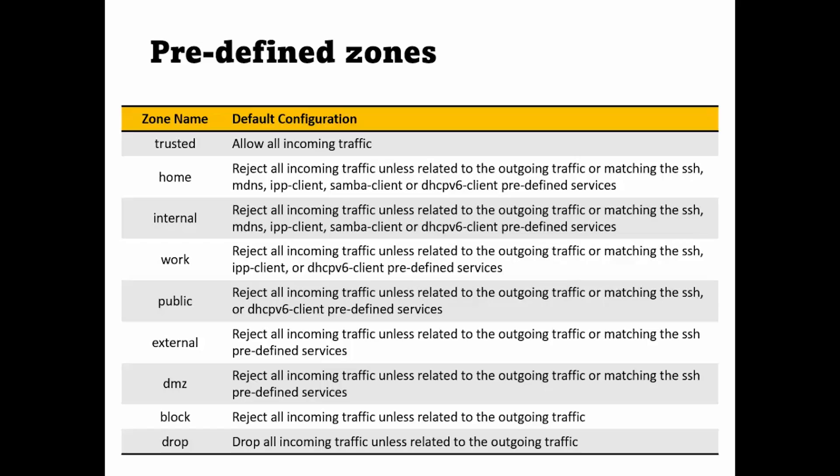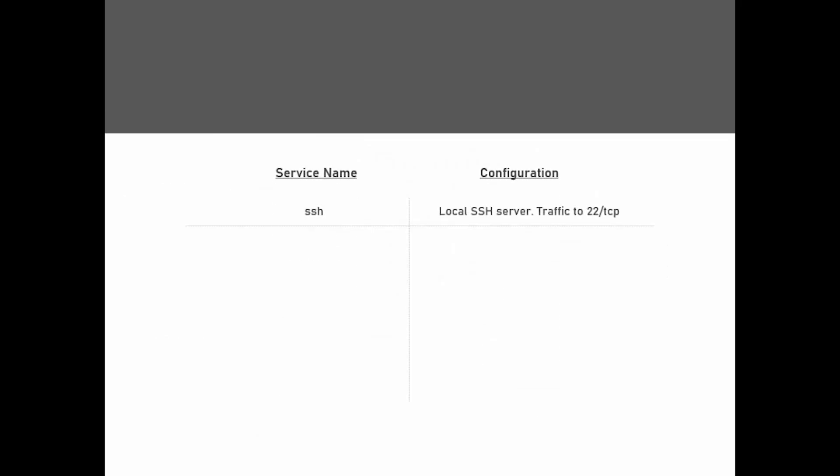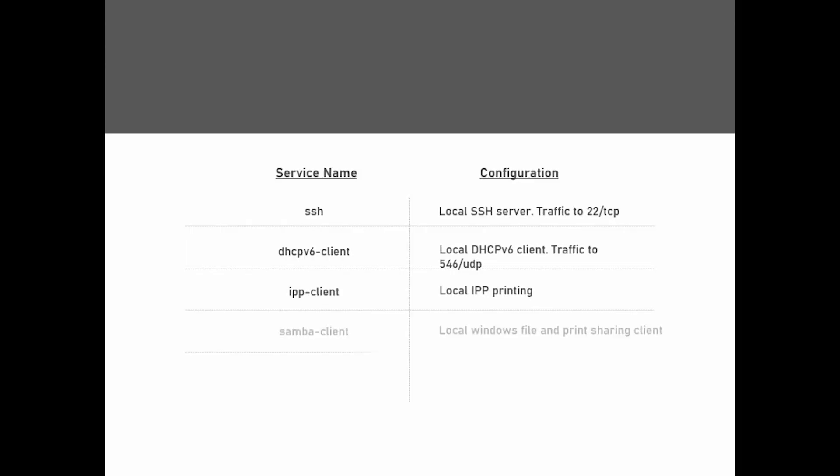If the traffic or source does not fall into any zone, it is checked whether the network interface it is coming in on is attached to one of the zones. If not, then the default zone is picked up and its rules are applied. By default the default zone will be public, but as an administrator you can change it to any of the available zones. Similar to predefined zones, there are also certain predefined services configured when you install the firewall D daemon.